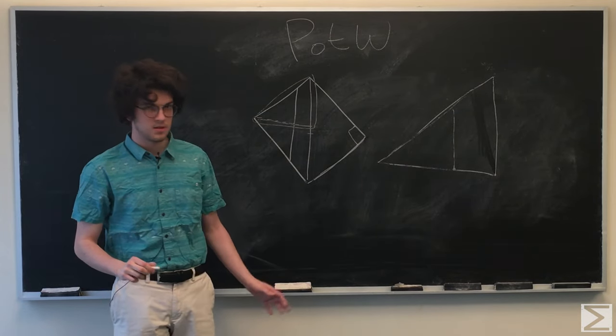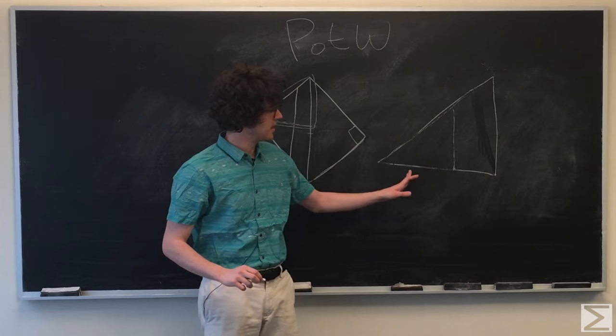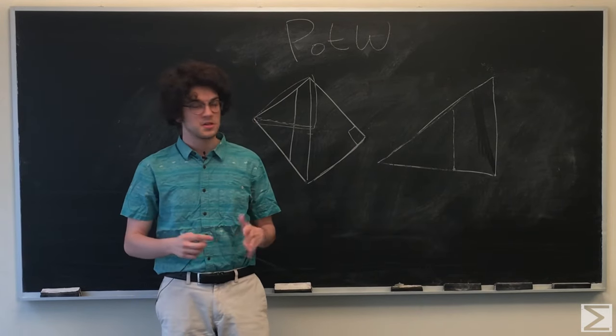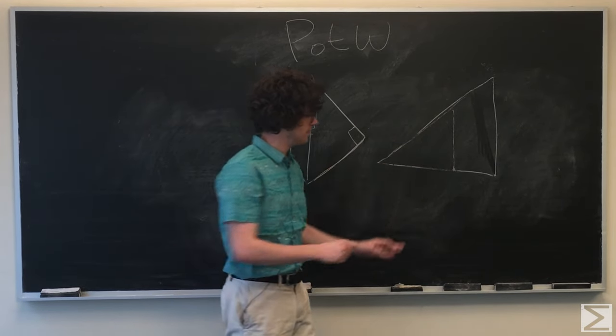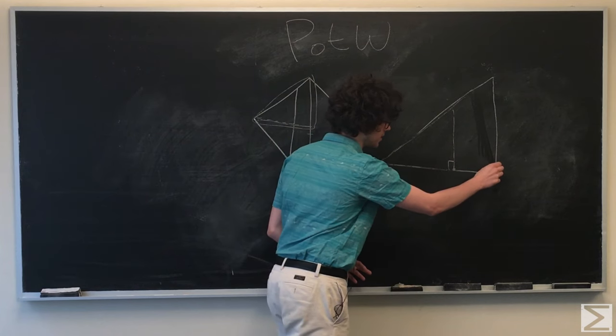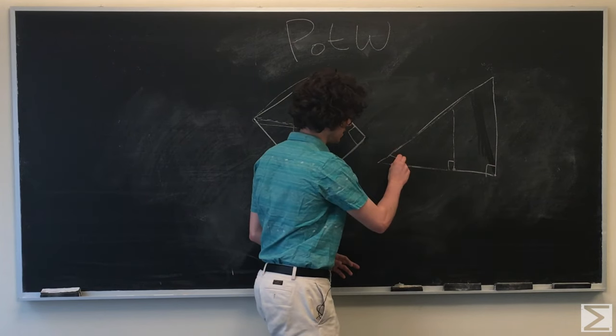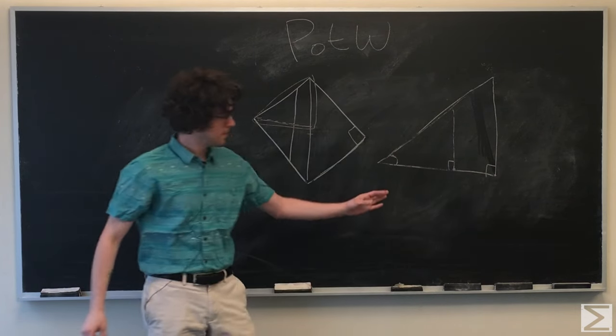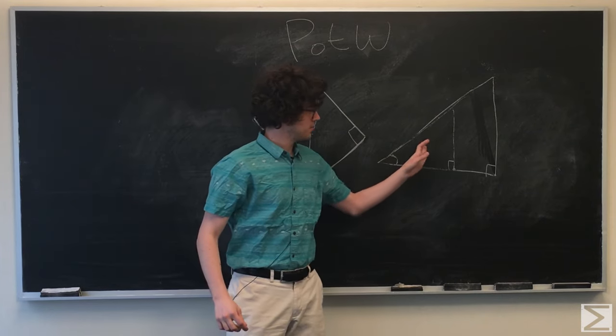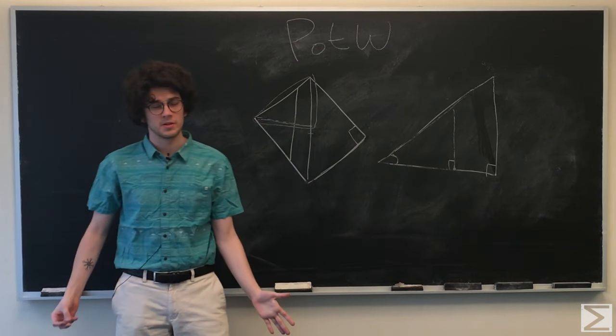And so I didn't draw this exactly to scale, but the notion is still the same. Any triangle that you inscribe with a 90 degree angle here, 90 degree angle here, since they both share this one angle, these two triangles, the small one and the big one, are going to be similar.